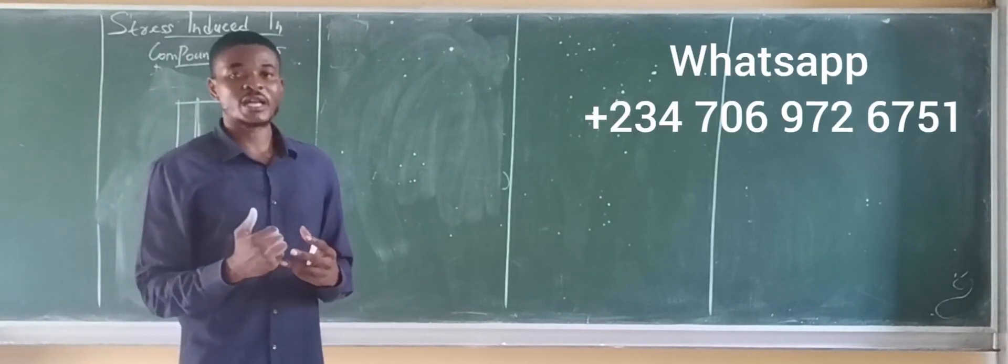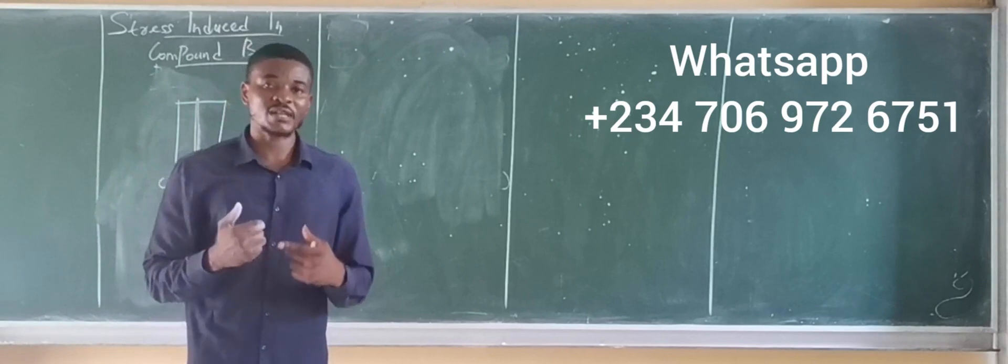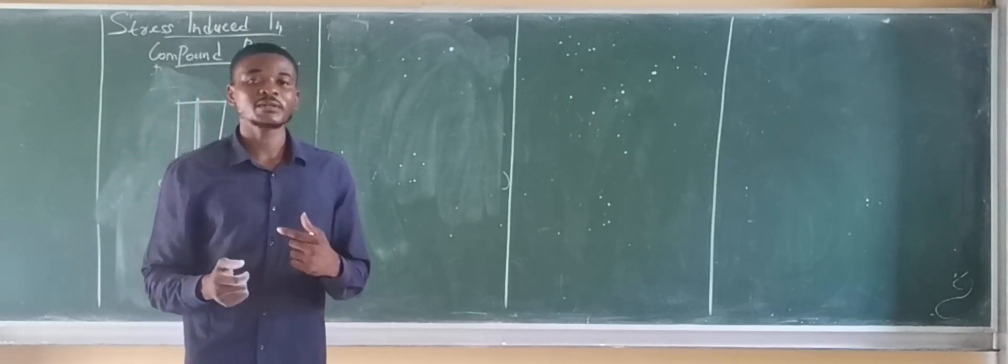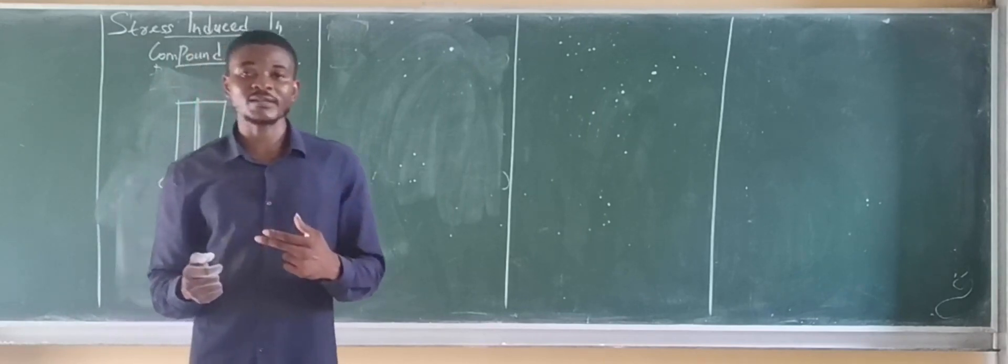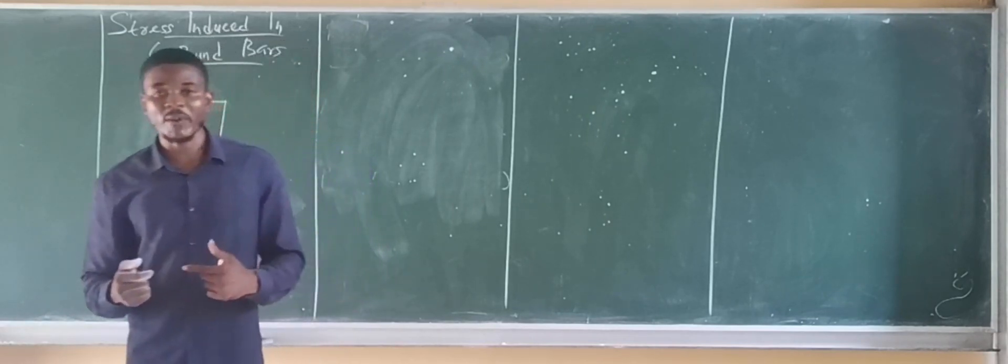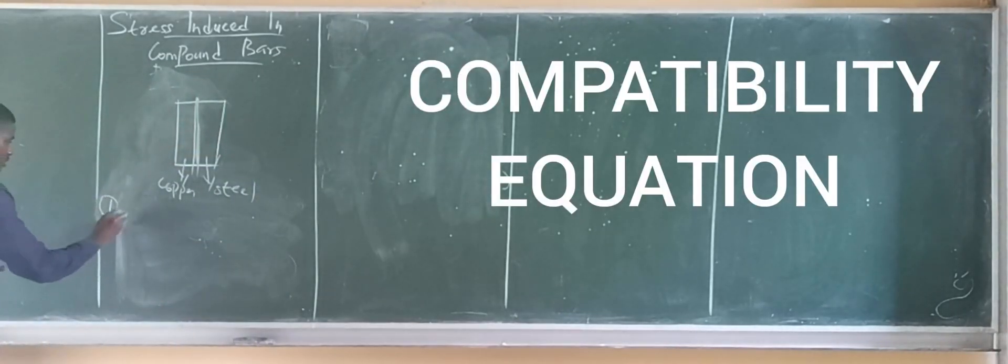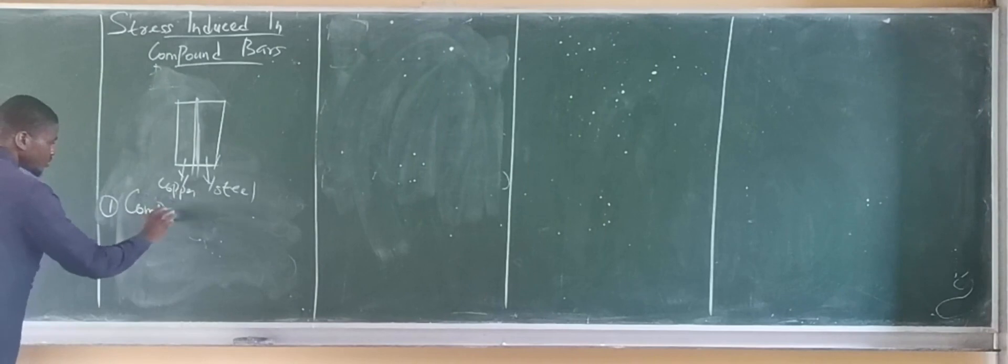This is a good example of a compound bar. So when this bar is joined together to prevent uneven strain of the bars, it is called a compound bar. Now, there are two very key formulas which we use to analyze compound bars. The first is what we call the Compatibility Equation.